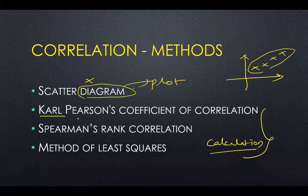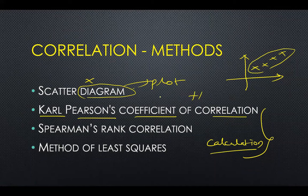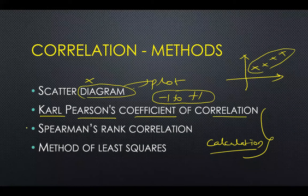The calculation methods include Pearson's coefficient of correlation, which gives a value ranging from minus one to plus one. Spearman's rank correlation is used for qualitative variables, and the method of least squares is also covered.